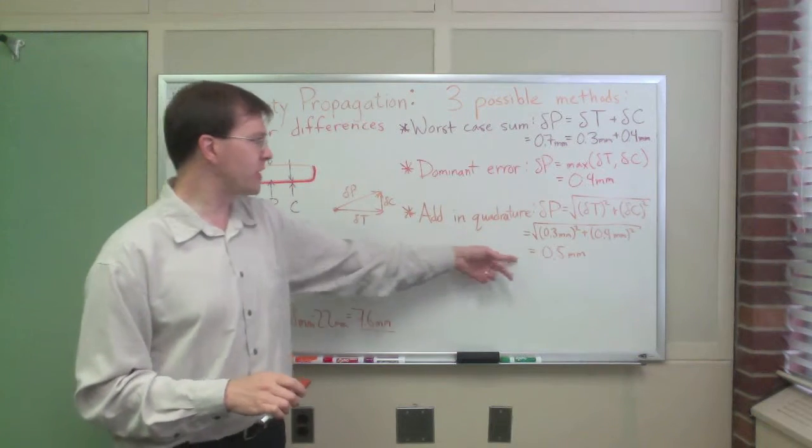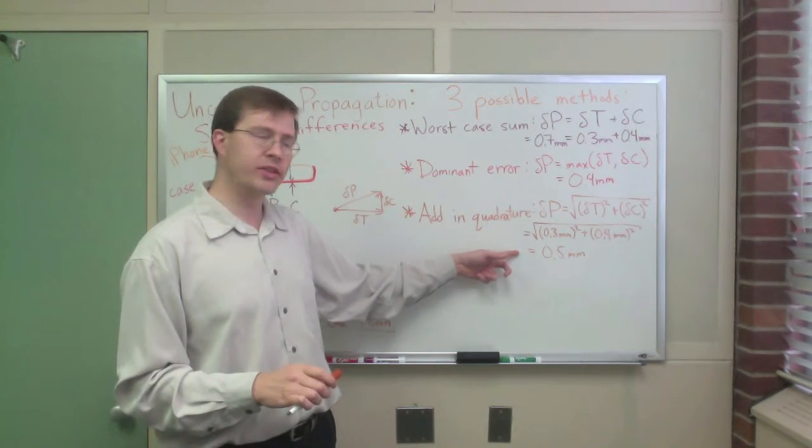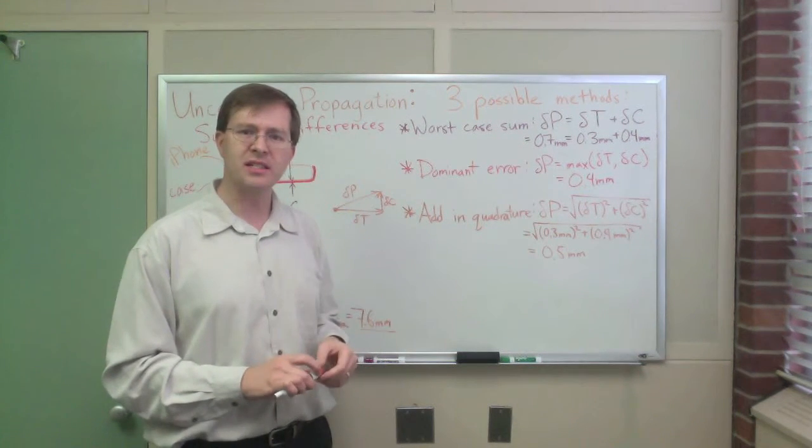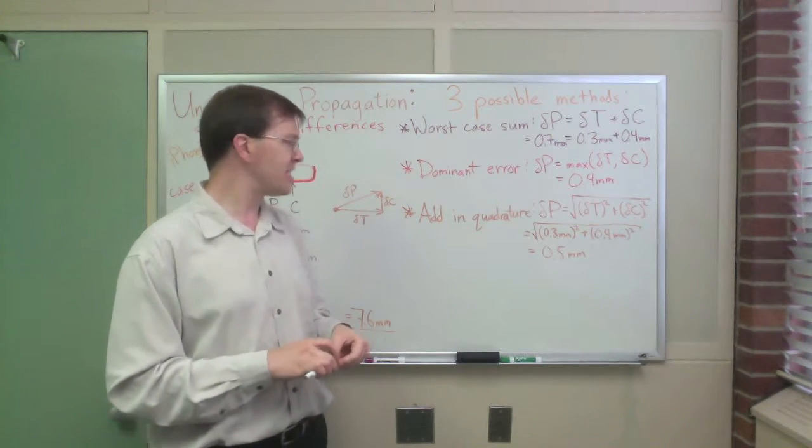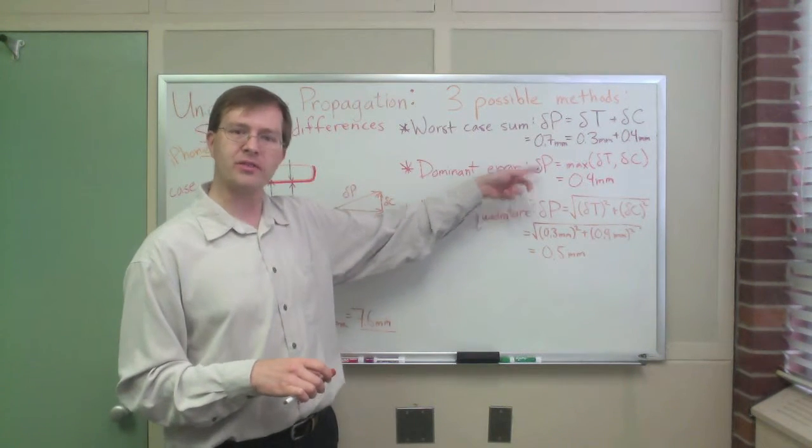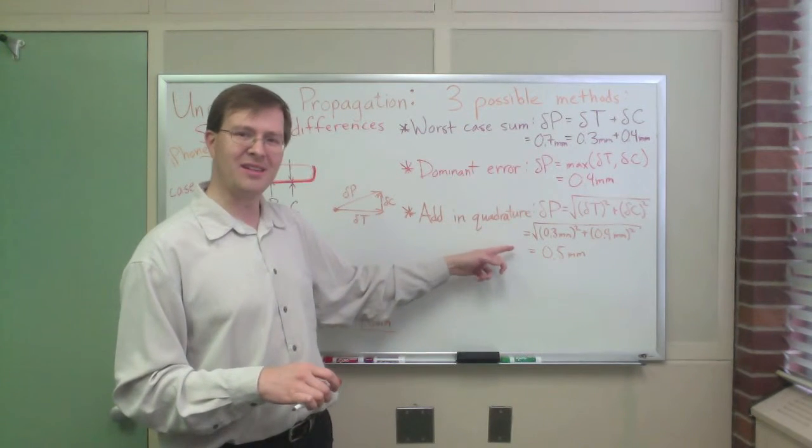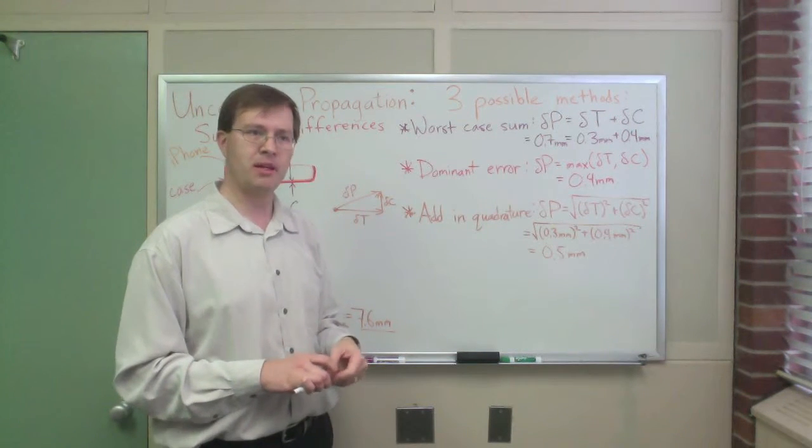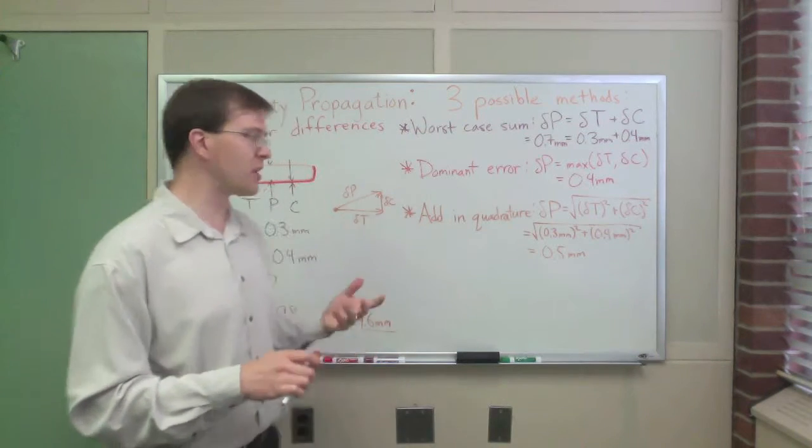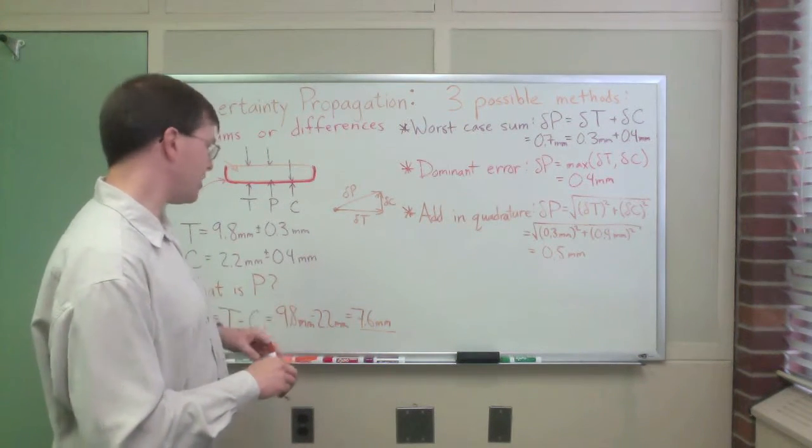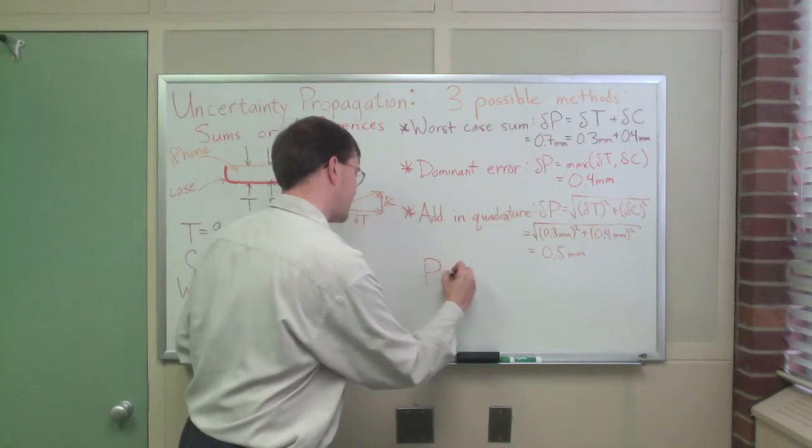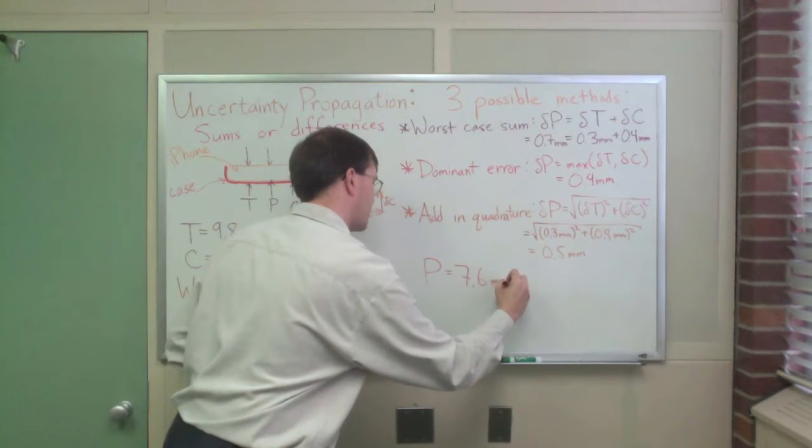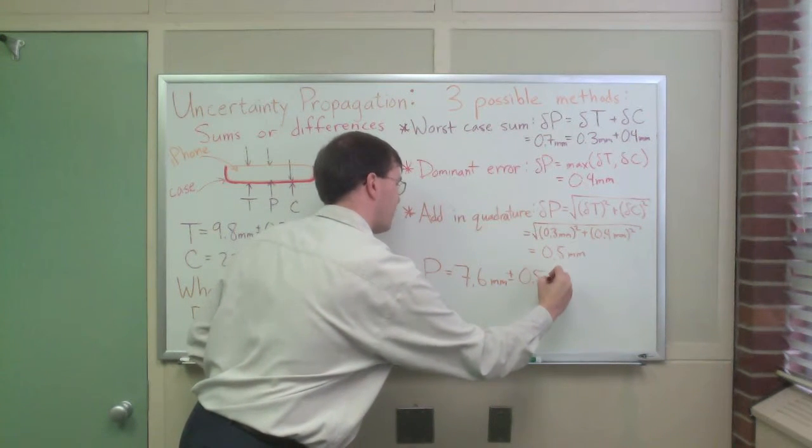Notice that the quadrature result is always going to be between the dominant error answer and the worst case sum answer. In most cases that I've experienced, it's going to be noticeably closer to the dominant error answer than the worst case sum. So this is the best method. If you're going to go second best, go with dominant error and just know you're being a little bit optimistic, and maybe bump it up a little in the end. But this is our result. So that means that I would report my value p, the phone thickness, as 7.6 millimeters plus or minus 0.5 millimeters.